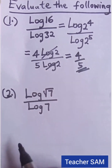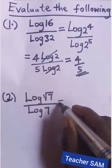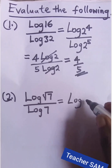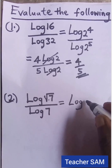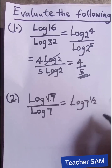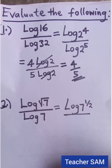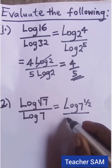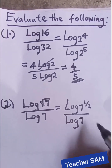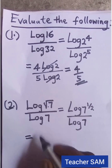Now let's look at question two: log of root 7 divided by log of 7. The same approach applies. You agree with me that in indices, root 7 is the same thing as 7 raised to the power 1 over 2. So we rewrite the numerator as log 7 to the power one half, divided by log 7.